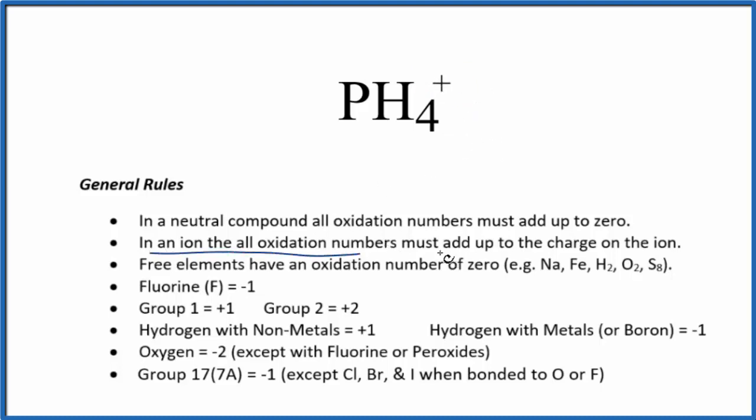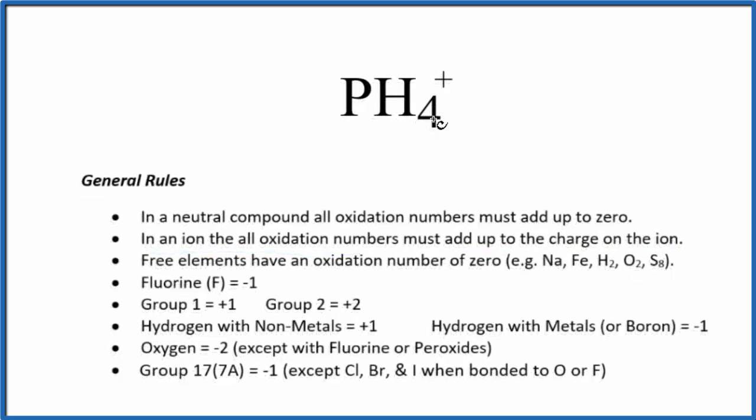the oxidation numbers will add up to the charge on the ion, so everything here will equal positive 1. For phosphorus we don't know what its oxidation number is going